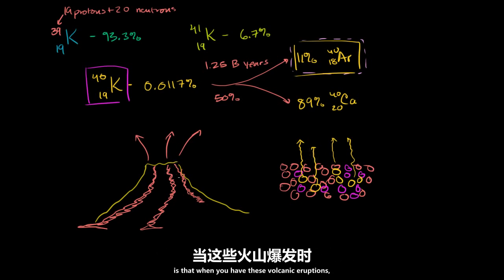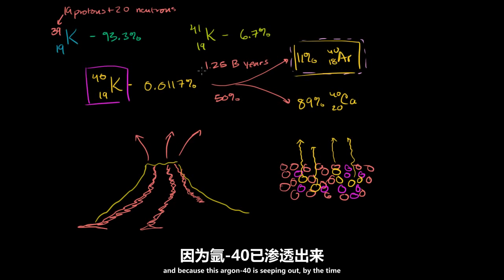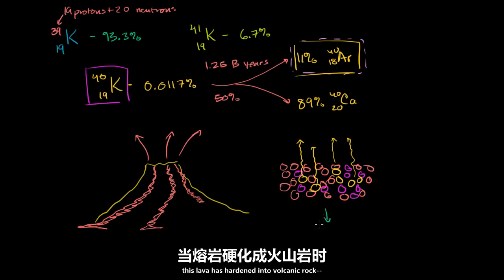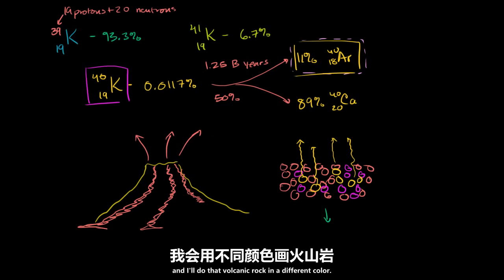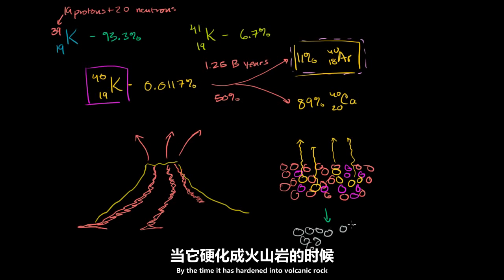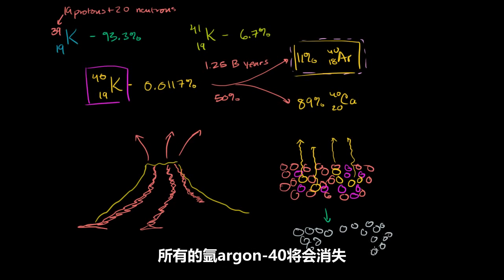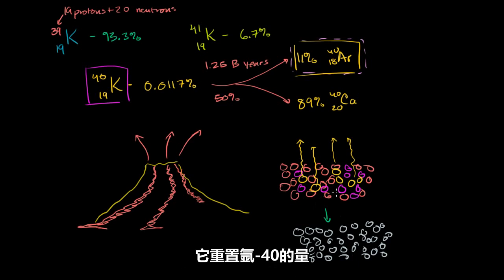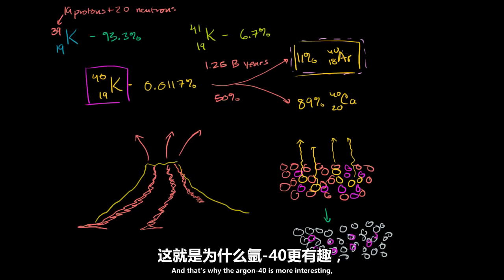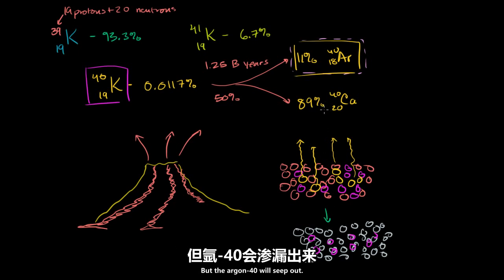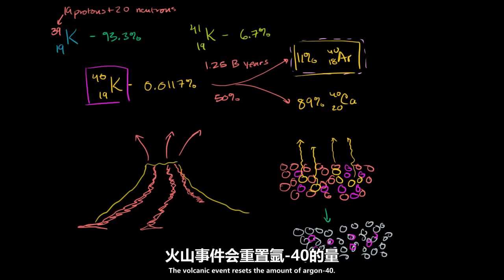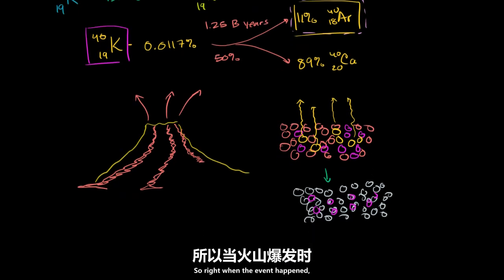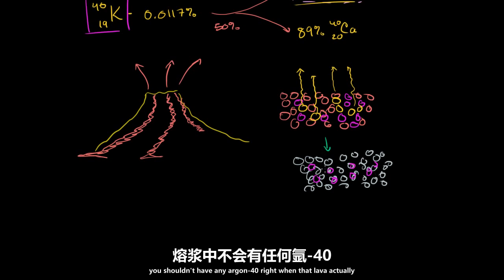What's really interesting is that when you have these volcanic eruptions, the argon-40 is seeping out. So by the time this lava has hardened into volcanic rock, all of the argon-40 will be gone. This volcanic event — the fact that the rock becomes liquid — kind of resets the amount of argon-40. So you're only going to be left with potassium-40. The argon-40 is more interesting than calcium-40 because calcium-40 won't necessarily have seeped out, but argon-40 will.